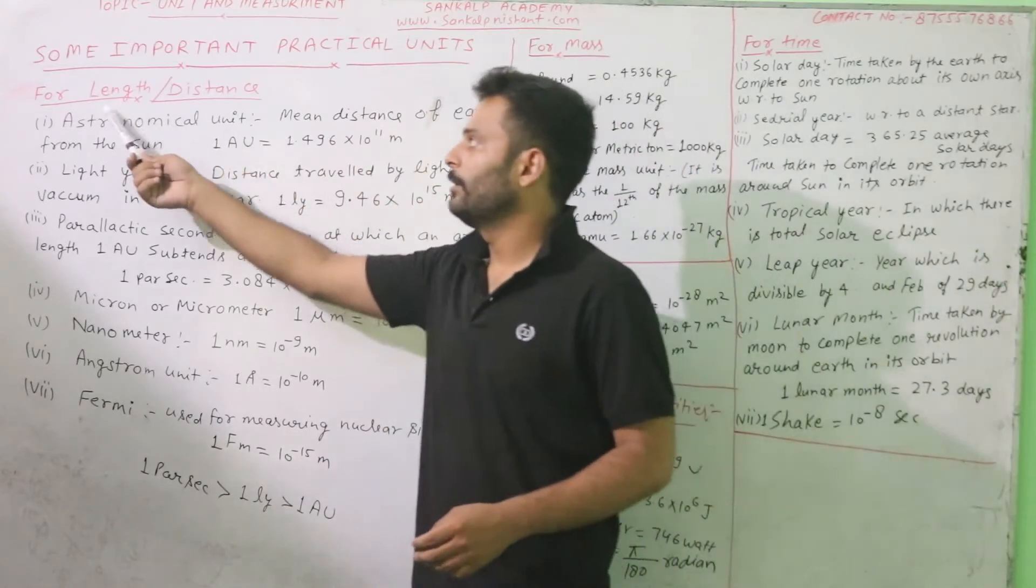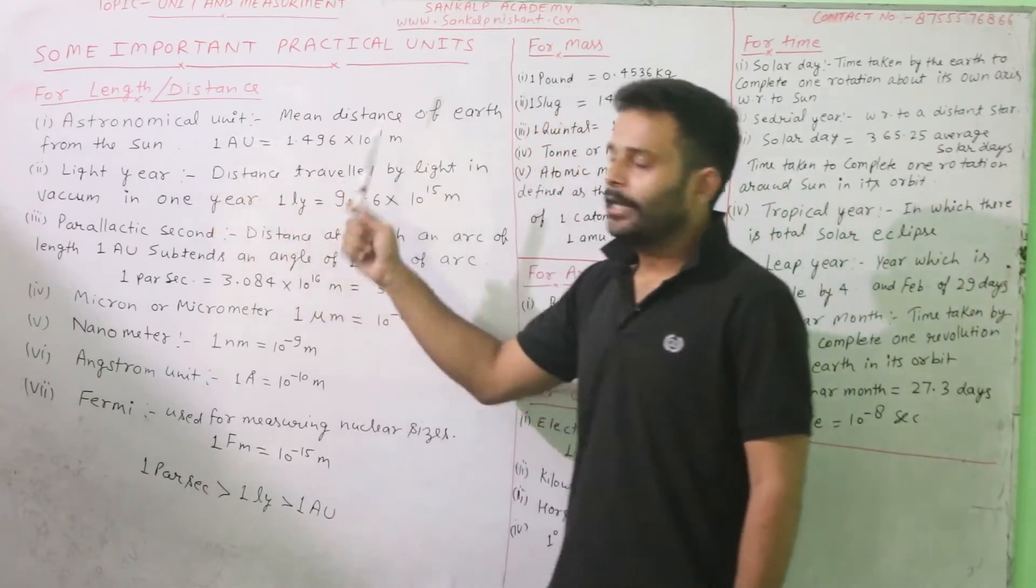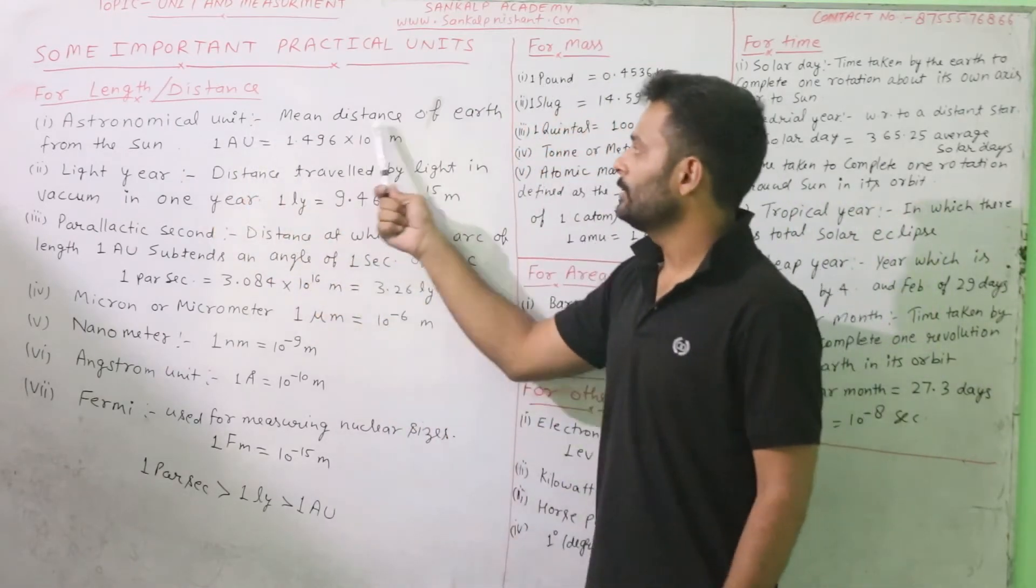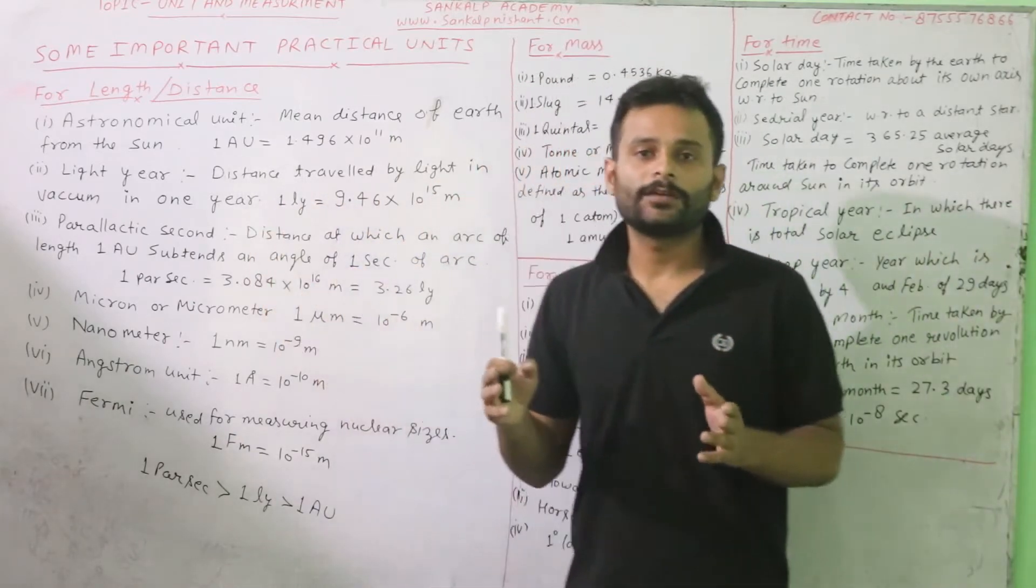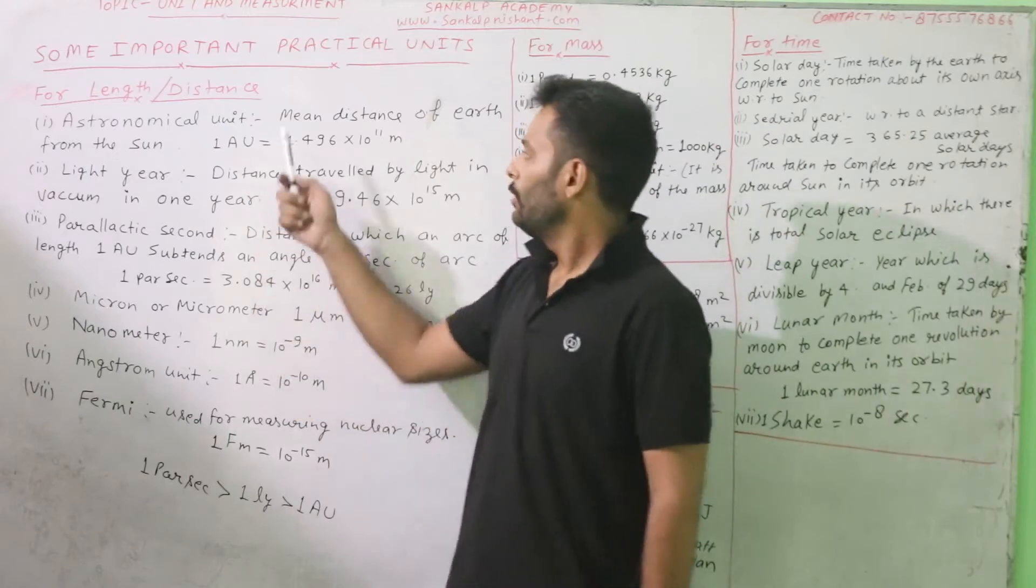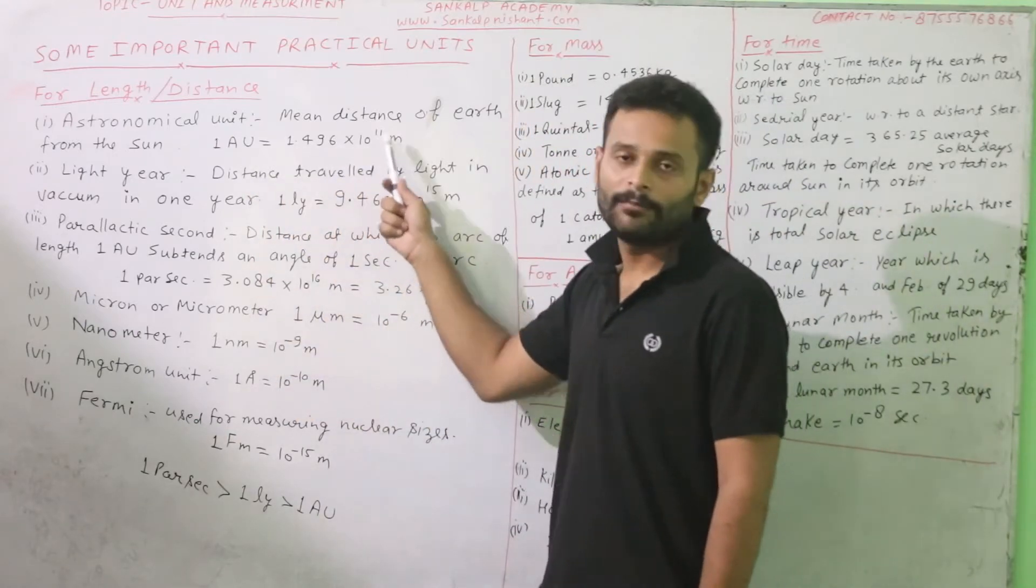The most important thing is length and distance. The first thing is astronomical unit. Astronomical unit, which is mean distance of Earth from the sun. Sun and Earth mean distance, which is astronomical unit. And one astronomical unit is 1.496 into 10 to the 11 meters.